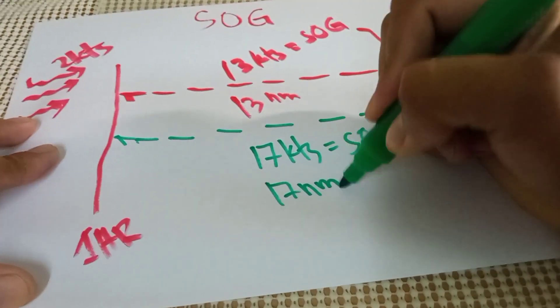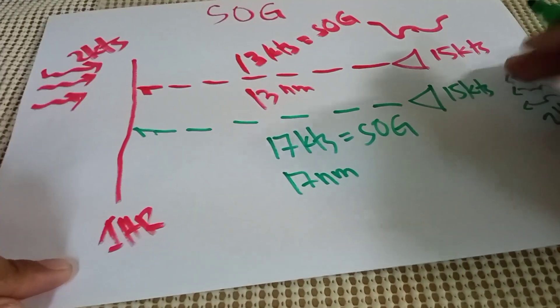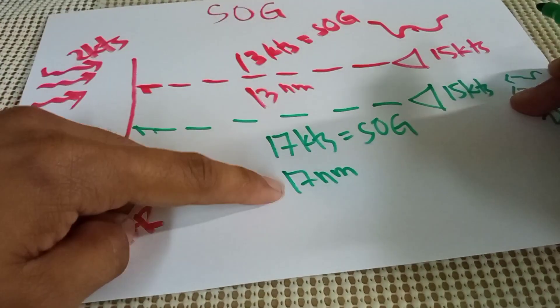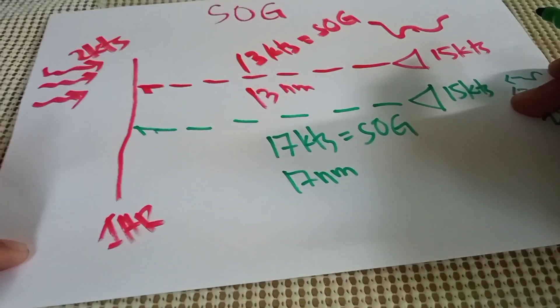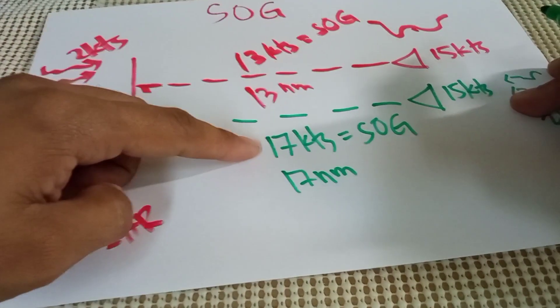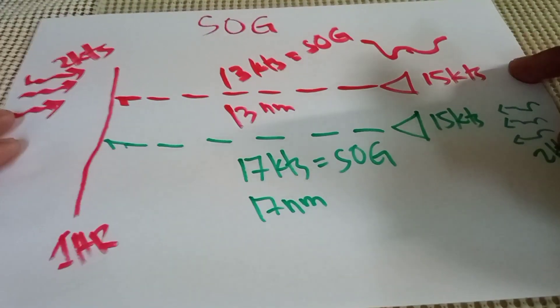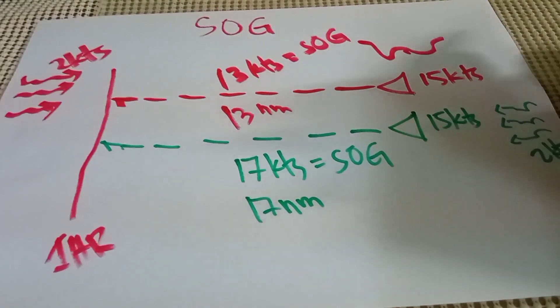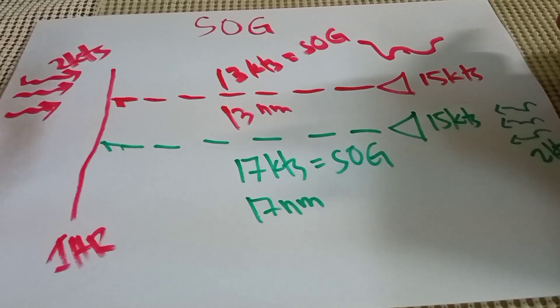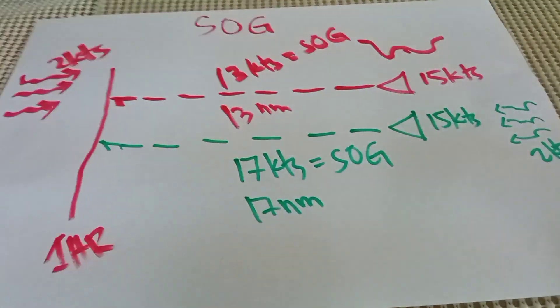You have to add two knots, so the SOG is 17 knots. Your vessel travels 17 nautical miles in one hour at 17 knots of speed. That is the SOG. Now let's proceed to speed through the water.